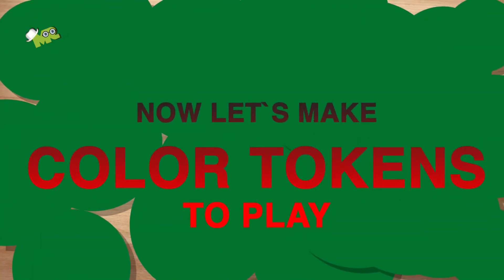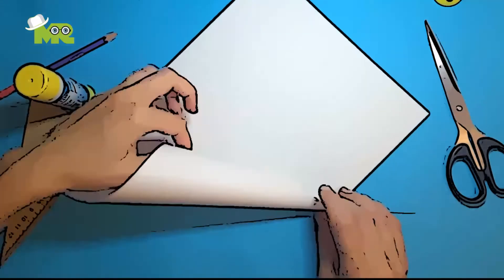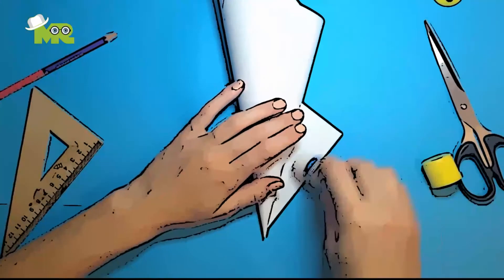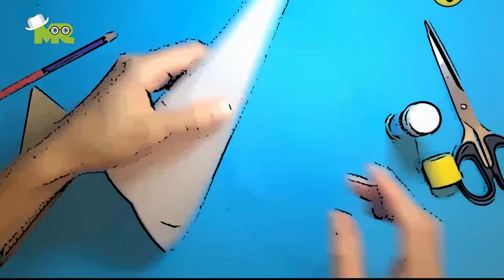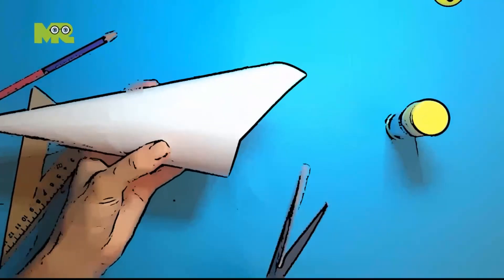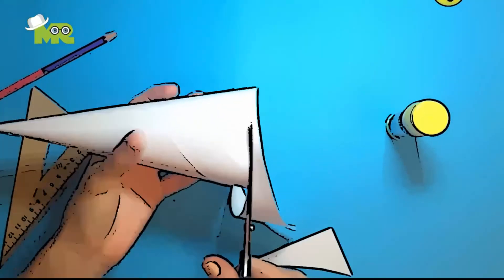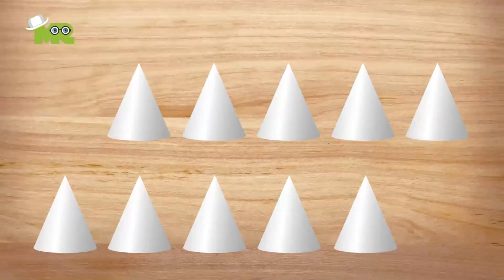Now let's make color tokens to play with. Cut out small strips of white craft paper and fold them into a triangle. Now cut out the bottom and stick them together. You now have small triangle cones, which you can use as tokens.